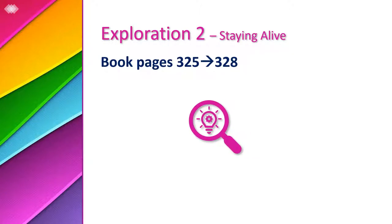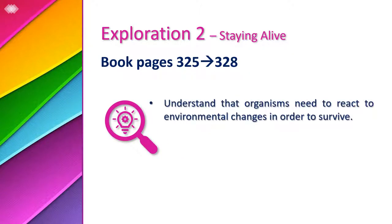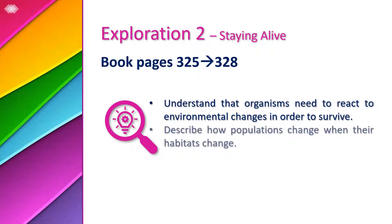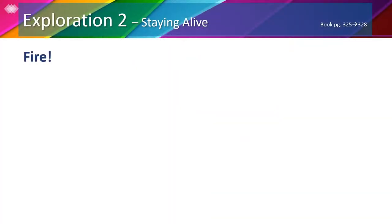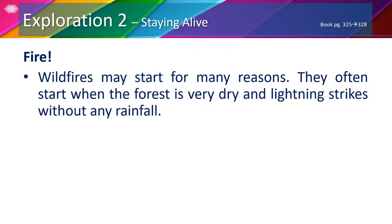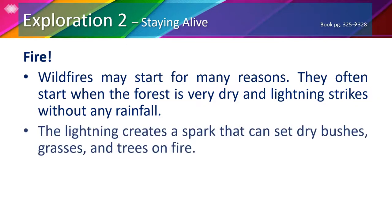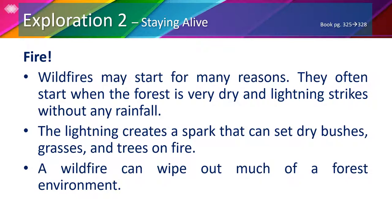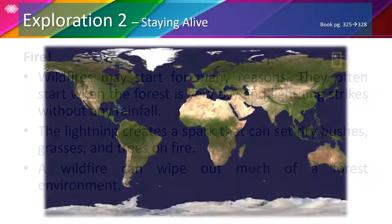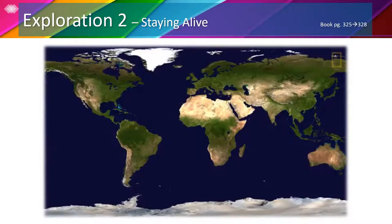In Exploration 2, we're going to learn how organisms react to environmental changes in order to survive, and we're going to describe how populations change when their habitats change. Wildfires may start for many reasons. They often start when the forest is very dry and lightning strikes without any rainfall. The lightning creates a spark that can set dry bushes, grasses, and trees on fire. A wildfire can wipe out much of a forest environment. Let's watch this video to know more about wildfires.